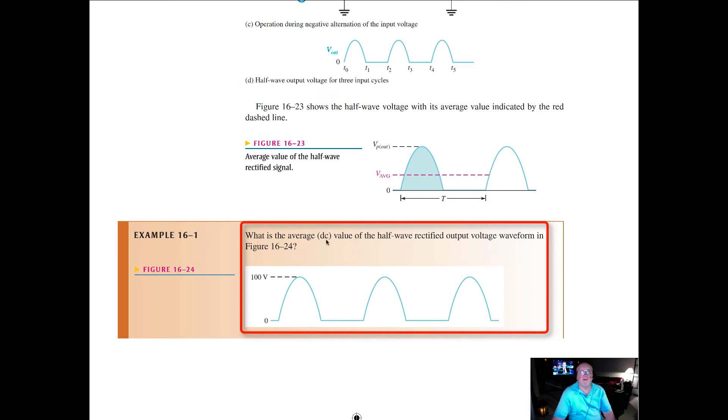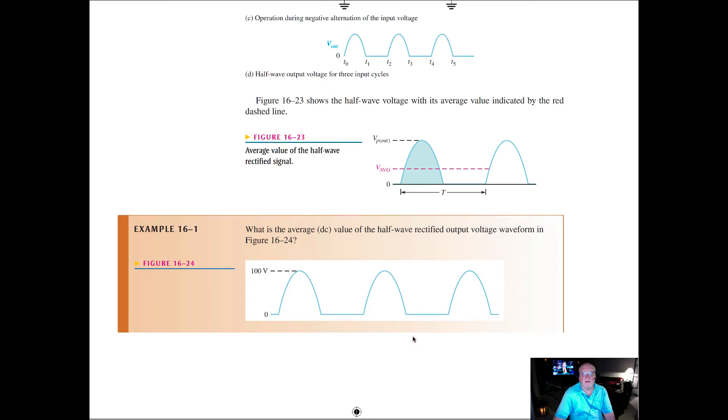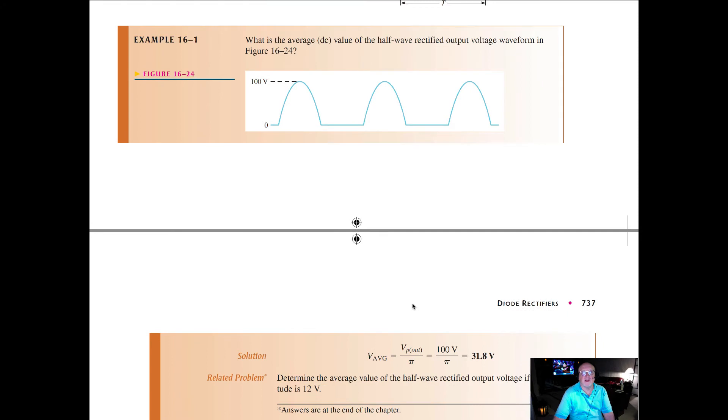In this example, what's the average DC value of the half wave rectified output voltage from the previous figure? We have 100 volts and then nothing. If we look at the relationship, the average is equal to the peak, in this case 100 volts, divided by pi. Pull out your calculator, put in pi, invert it, multiply it times 100, and you get 31.8 volts.